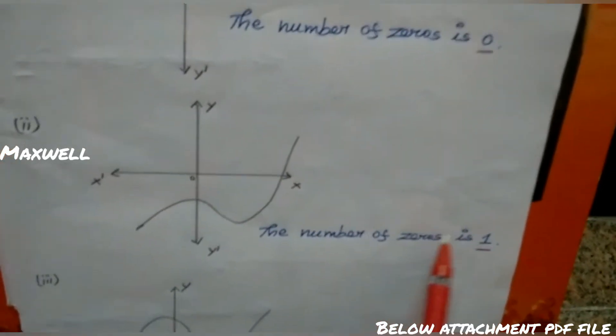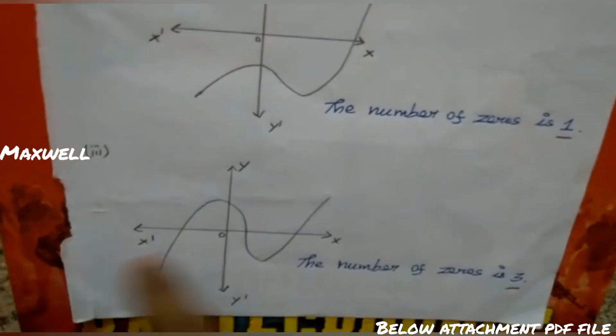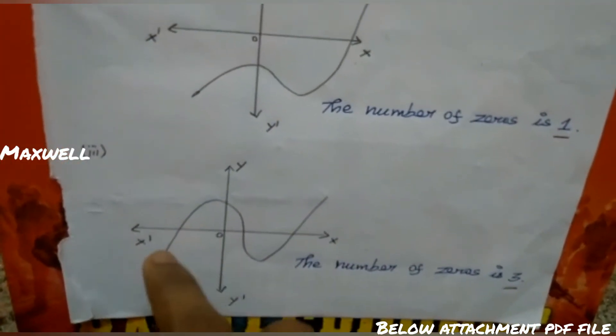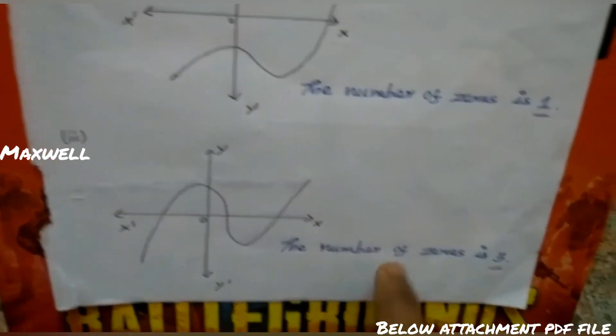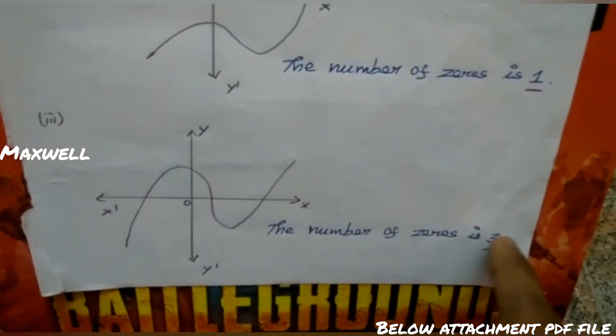Third case: this diagram touches the x-axis. One, two, three. The number of zeros is 3.